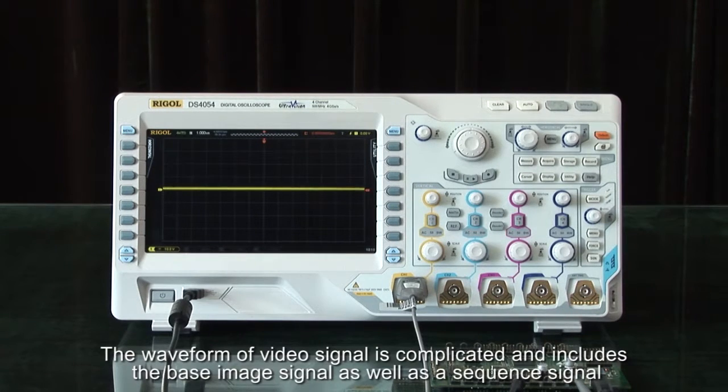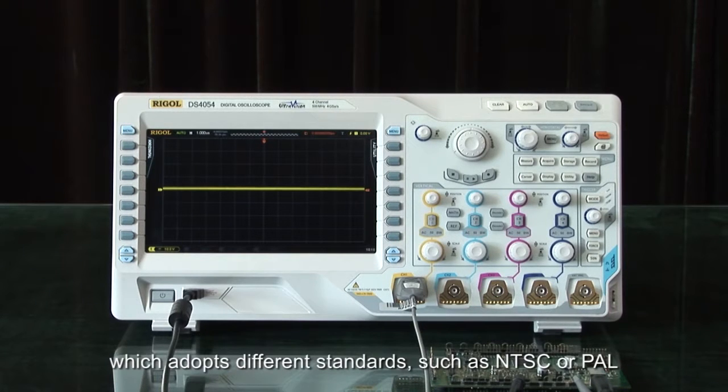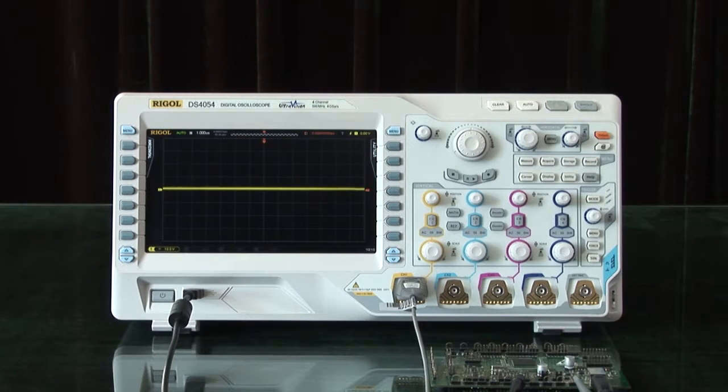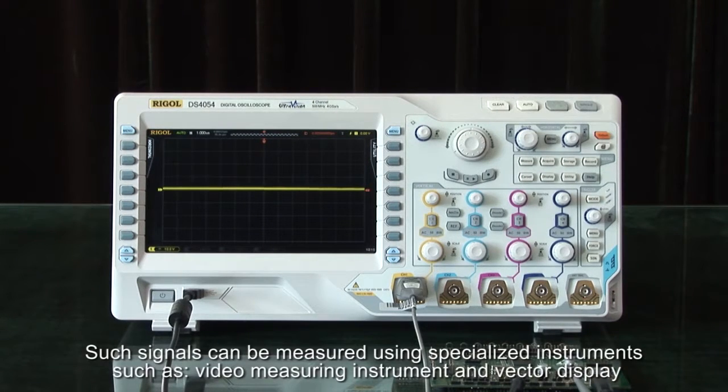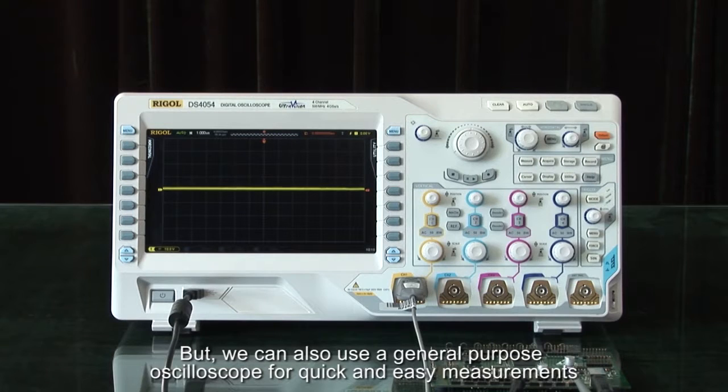The waveform of the video signal is complicated and includes the base image signal as well as the sequence signal which adopts different standards such as NTSC or PAL. Such signals can be measured using specialized instruments such as video measuring instruments or vector displays, but we can also use a general purpose oscilloscope for quick and easy measurements.